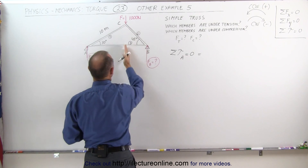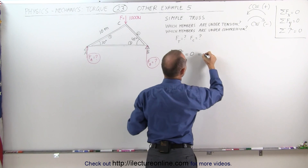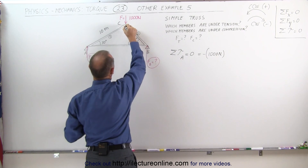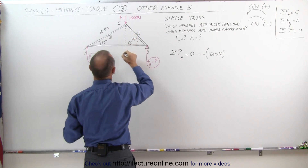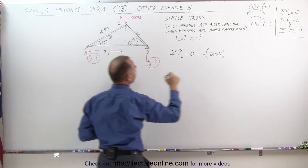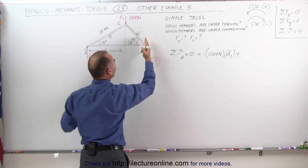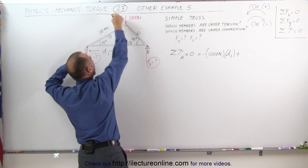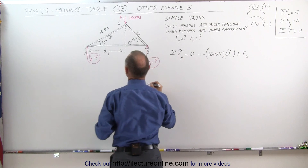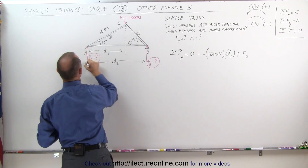Let's start with the thousand-newton force that causes a clockwise torque — that's a negative torque — minus one thousand newtons times the perpendicular distance from the line of action of the force to the pivot point; let's call that distance D1. Plus, the reactionary force at B causes a counterclockwise torque — that's a positive torque — force at B times the perpendicular distance from the line of action to the pivot point; let's call that distance D2.